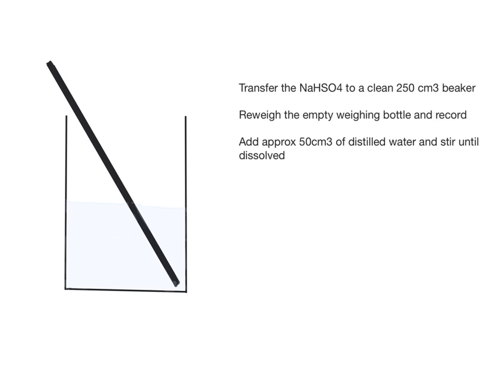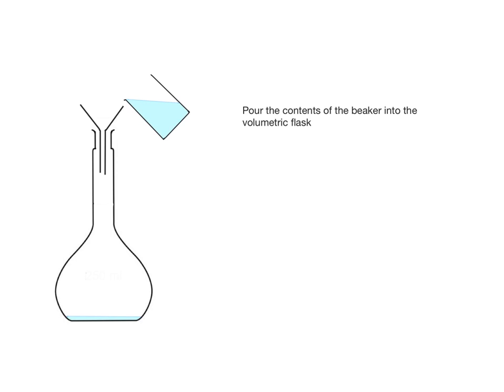Stir using a glass rod until dissolved. Pour the contents of the beaker into the volumetric flask. Rinse the beaker, glass rod, and funnel with distilled water and add the washings to the volumetric flask. It's worth doing this a couple of times to ensure everything has transferred.